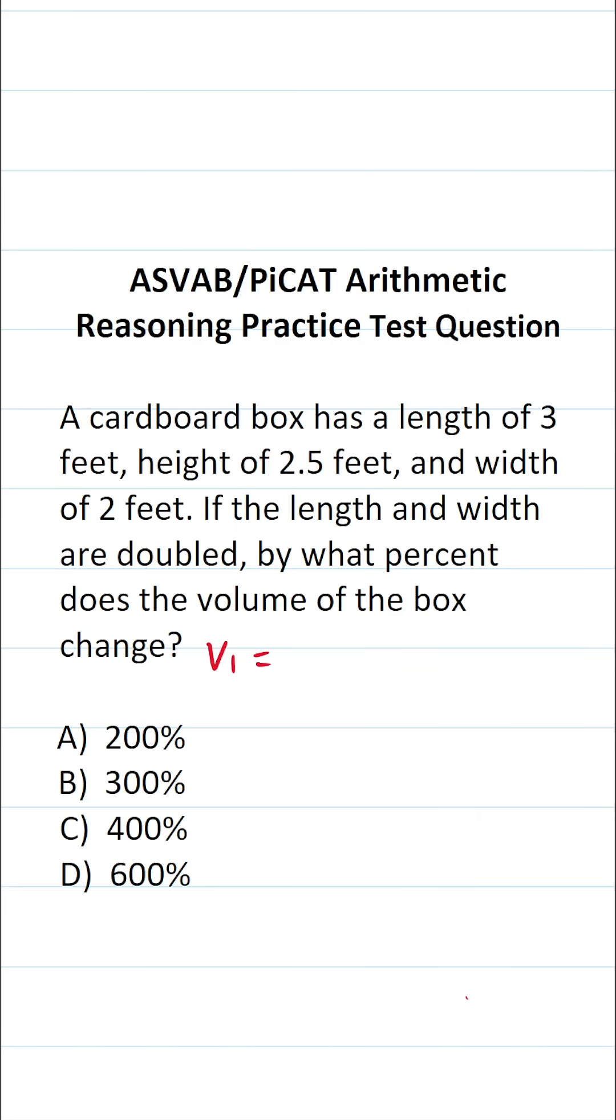In this case, it's pretty obvious that we're comparing the volume of two cardboard boxes. A cardboard box is a rectangular prism, and the formula we use to calculate the volume of a rectangular prism is length times width times height. On the ASVAB and PiCAT, you're not given a reference sheet or a calculator, so you do have to commit some of these basic formulas, including how to calculate the volume of a rectangular prism, to memory.